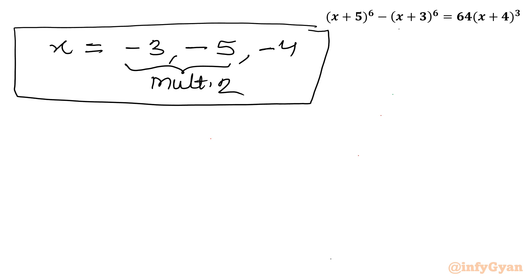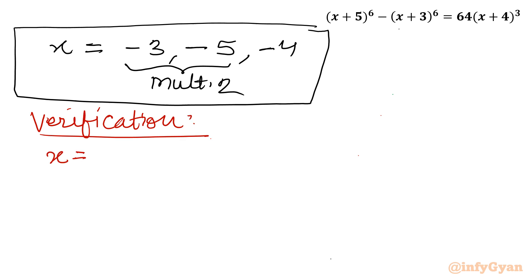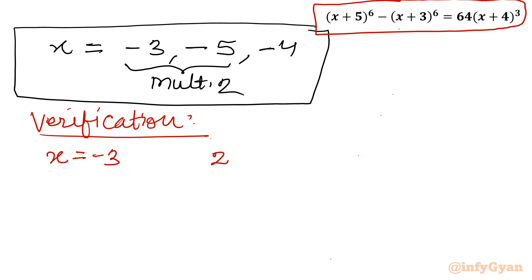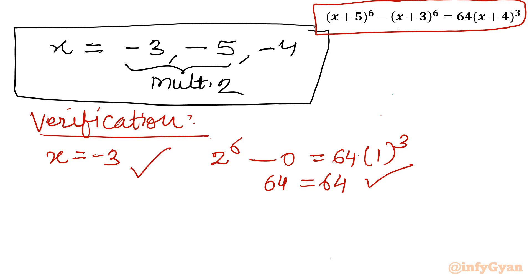Let us verify our results. For x = -3: left side is (−3+5)⁶ − (−3+3)⁶ = 2⁶ − 0 = 64. Right side is 64·(−3+4)³ = 64·1 = 64. Verified, this solution is true.